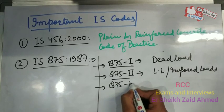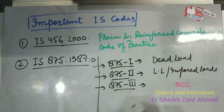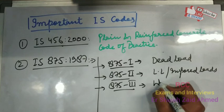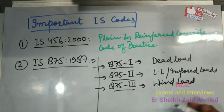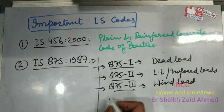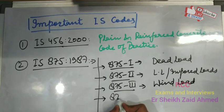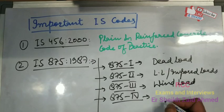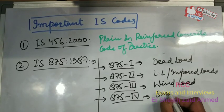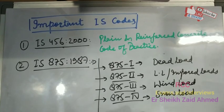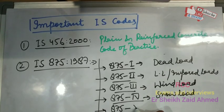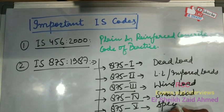Coming to IS-875 Part 3 — this IS code is regarding wind load. If you have to perform wind load analysis or design, we refer IS-875 Part 3. IS-875 Part 4 is for snow load — for snow load calculation, we refer Part 4. The last part, IS-875 Part 5, is regarding special loads and load combinations.